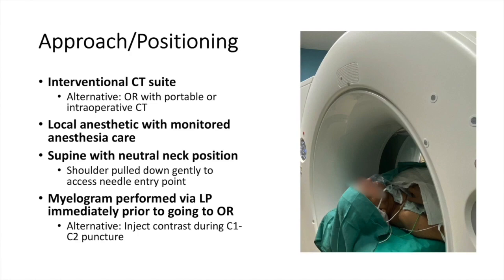The procedure is done under local anesthetic with monitored anesthesia care. It is important to provide local anesthesia and light conscious sedation for the initial needle placement. The patient should be awoken for test stimulation and lesioning. The patient is positioned supine, and it is important that the head remain immobilized in a straight and neutral position within the CT gantry. The shoulders should be pulled down as needed to ensure access to the neck. The patient is draped and the area around the mastoid tip is prepped in a sterile fashion.